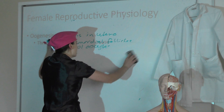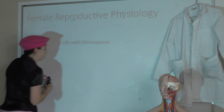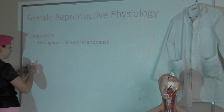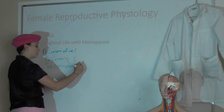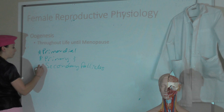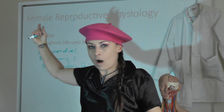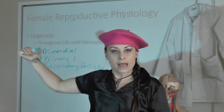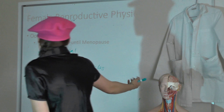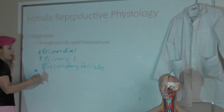Throughout life until menopause, you're going to start developing those primordial follicles into primary and secondary follicles. You'll find in an ovary primordial, primary, and secondary follicles — that's what's weird and cool about an ovary. You can look at this ovary and see all of these follicles in these various stages of development, which means you have all of these oocytes in these various stages of meiosis right there in the same ovary. From birth until menopause, you can see various stages of this development going on.